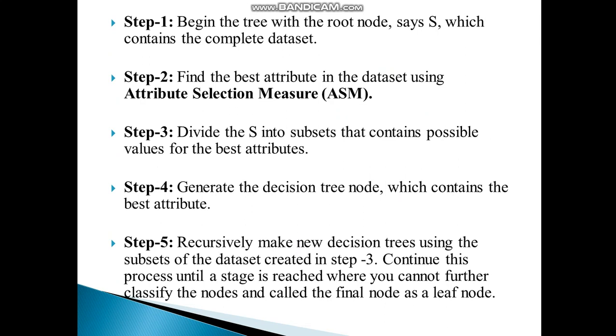Step 3: Divide S into subsets that contain possible values for the best attributes. Step 4: Generate the Decision Tree node which contains the best attribute. Step 5: Recursively make new Decision Trees using the subsets of the dataset created in Step 3, and continue this process until you cannot further classify the nodes and call the final node as a Leaf Node.